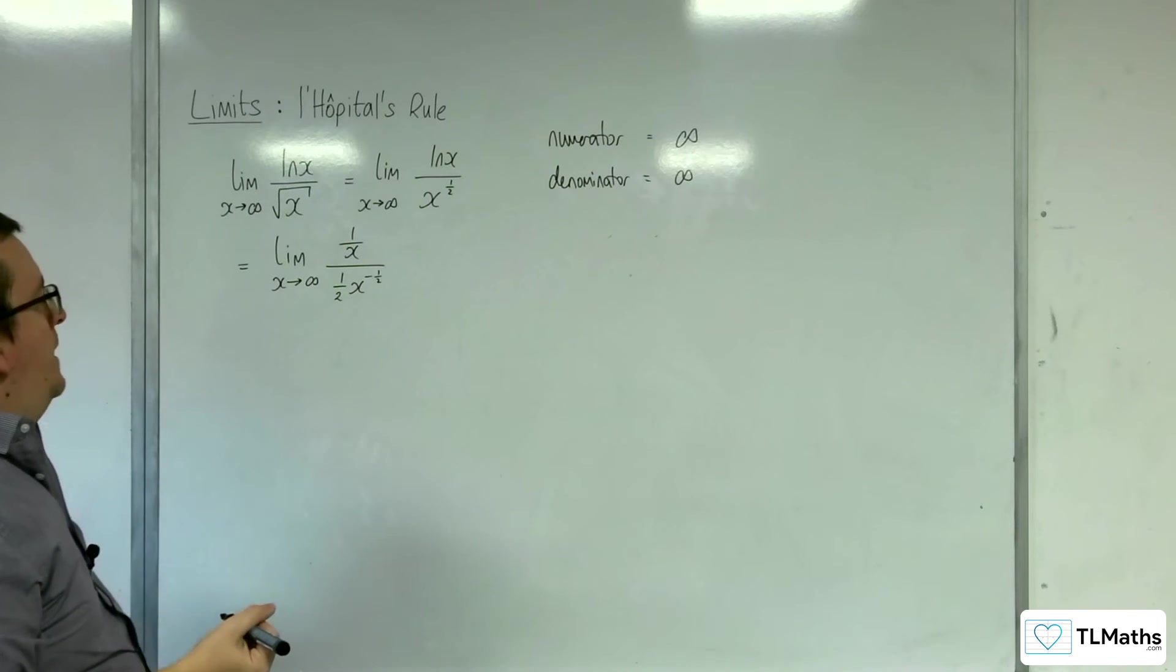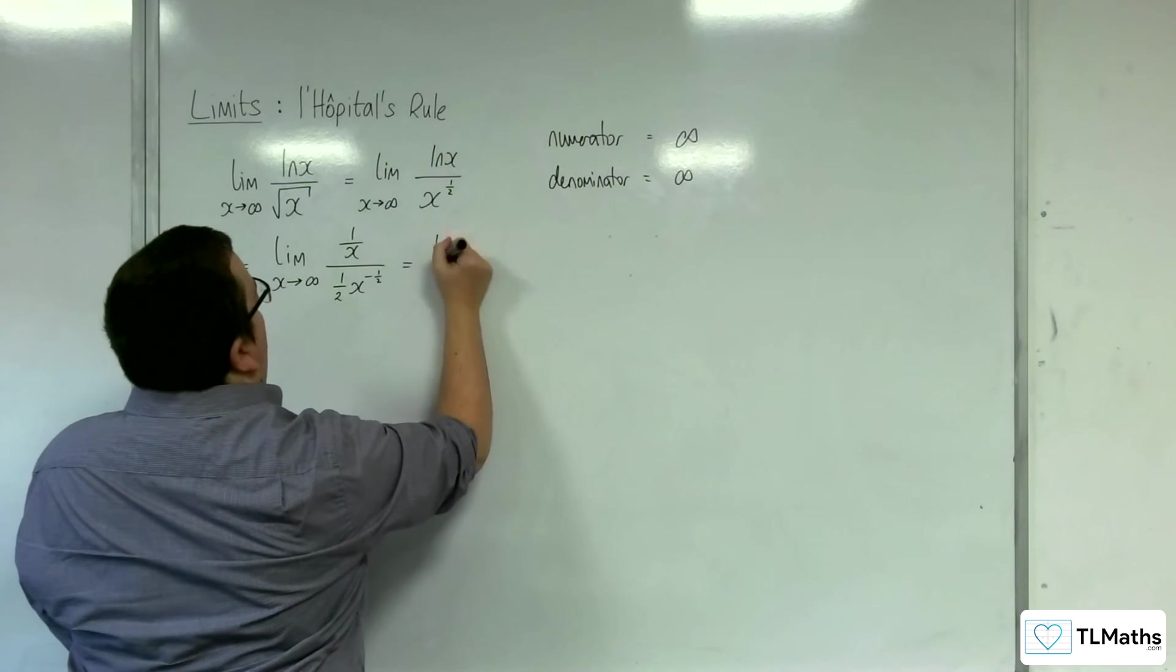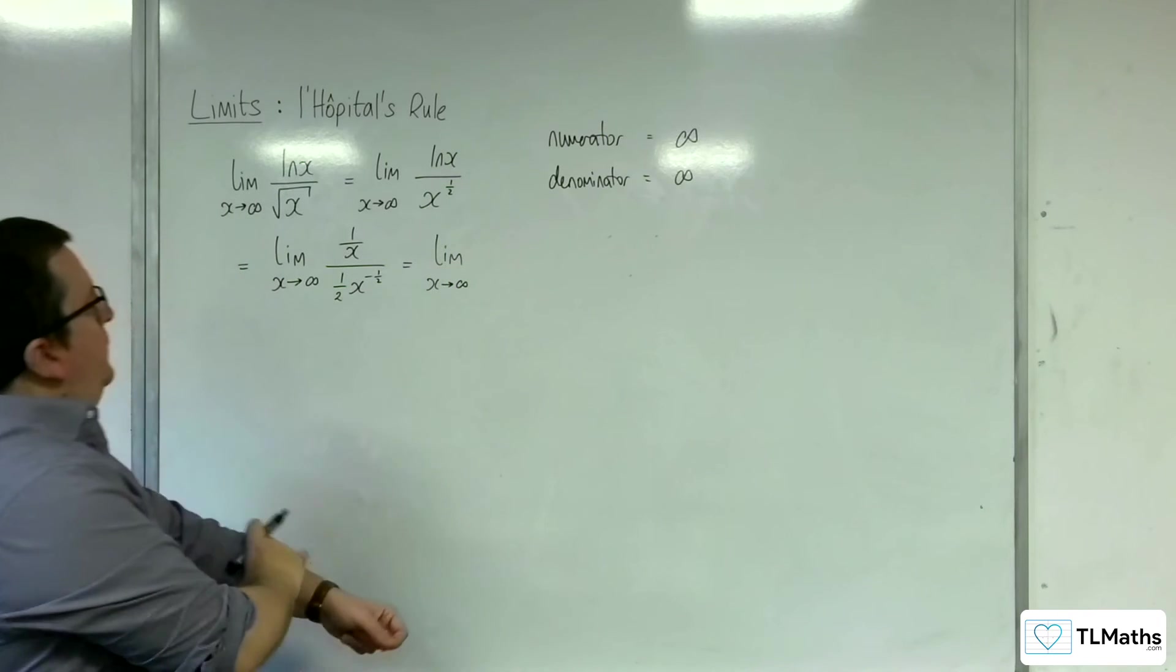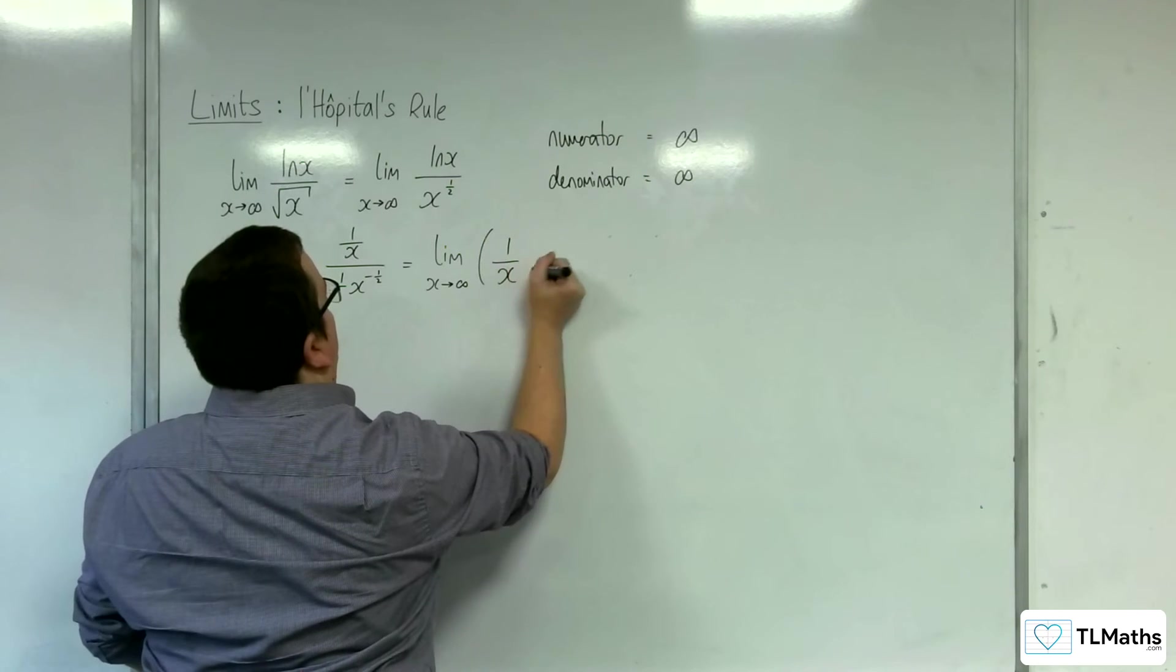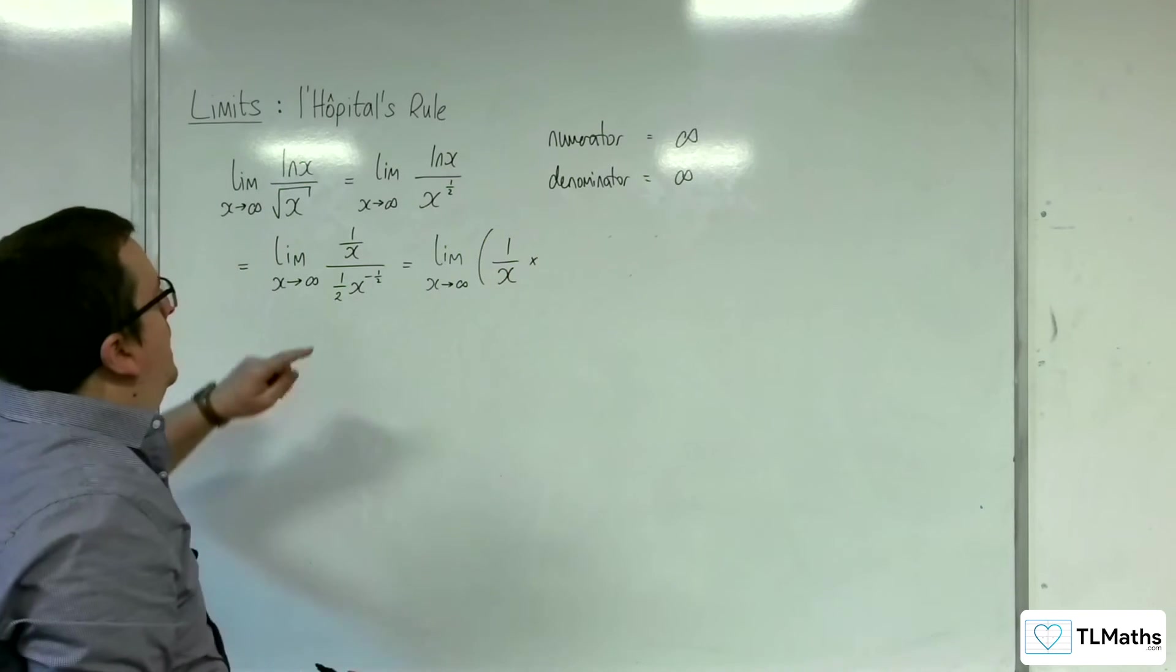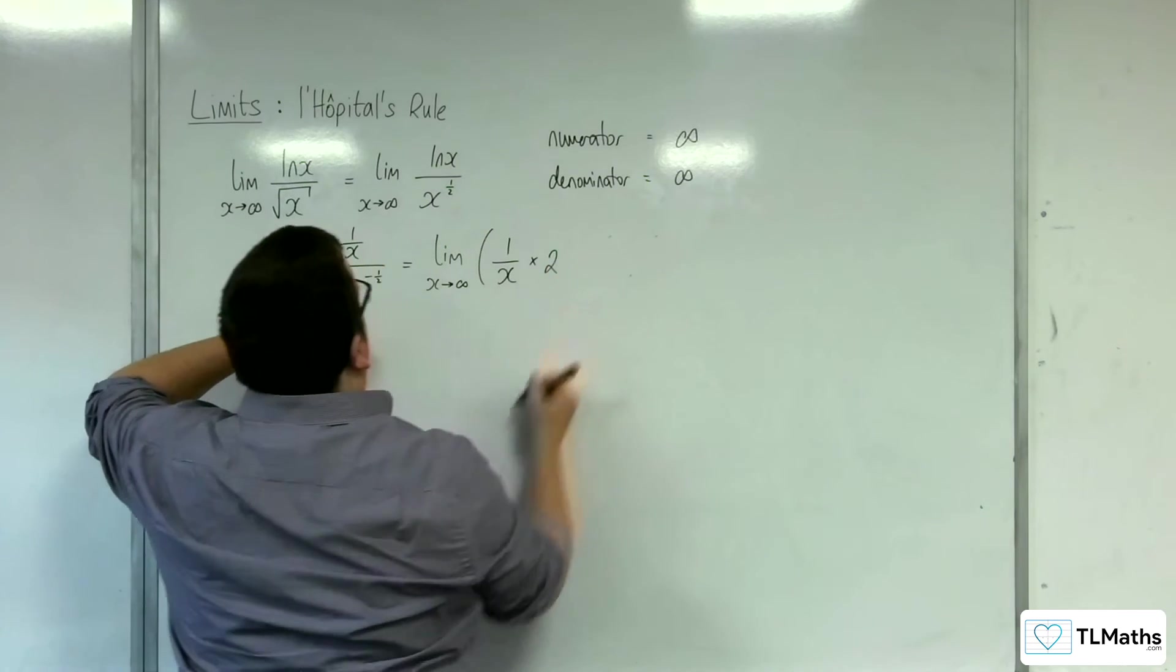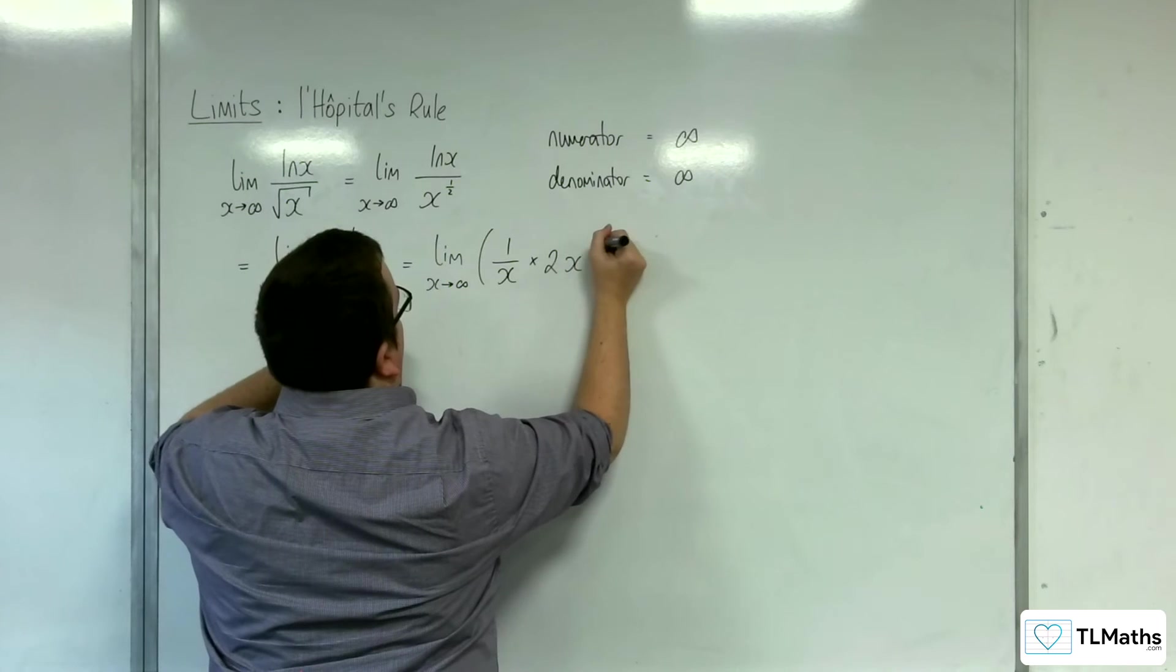So our job now is to evaluate this. Let's simplify the algebra a bit. We've got 1 over x times by, so we're dividing by half, so that's timesing by 2, and dividing by x to the minus a half is the same as multiplying by x to the half.